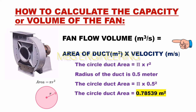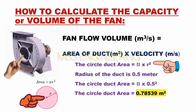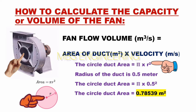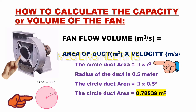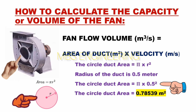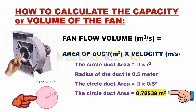The capacity or volume of the fan is equal to the velocity multiplied by the suction ducting area. First, we calculate the suction ducting area of the fan. Since the fan suction area is circular, the suction ducting area equals pi times r squared. The radius of the duct is 0.5 meters, so the suction ducting area is pi × 0.5², giving 0.78539 meters squared.